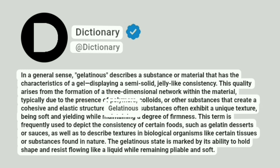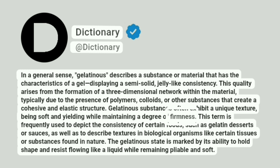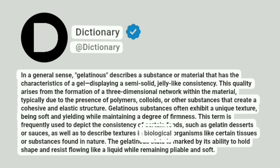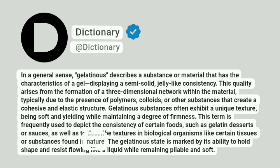Gelatinous substances often exhibit a unique texture, being soft and yielding while maintaining a degree of firmness. This term is frequently used to depict the consistency of certain foods, such as gelatin desserts or sauces, as well as to describe textures in biological organisms like certain tissues or substances found in nature.